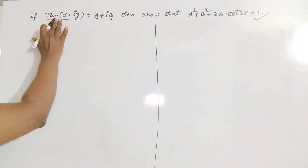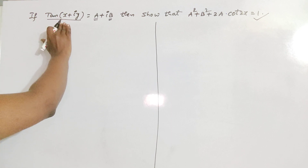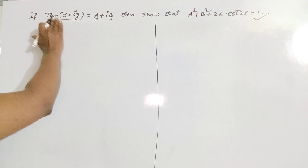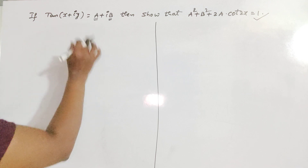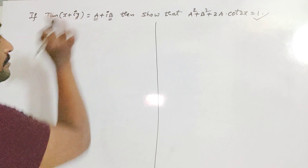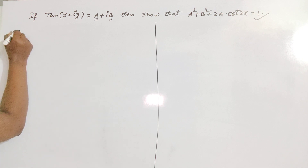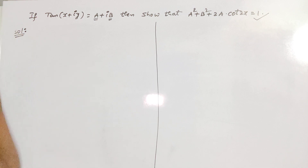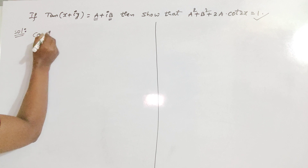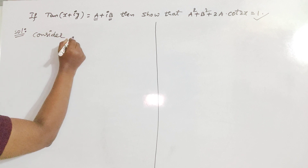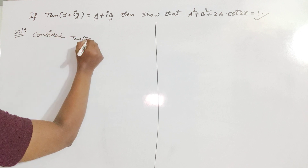First of all, we have to take this trigonometric function and find out what is the real part and what is the imaginary part, and we have to put the names as A and B. It is enough to find out the A value and B value first. So consider tan(x + iy).